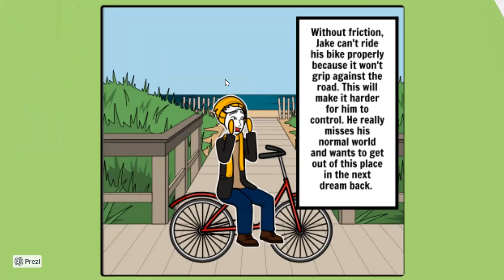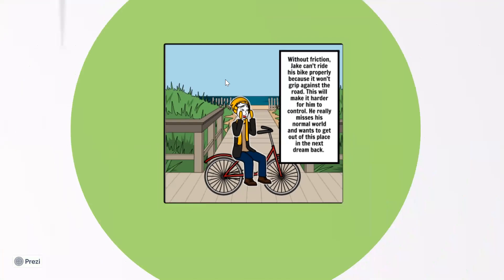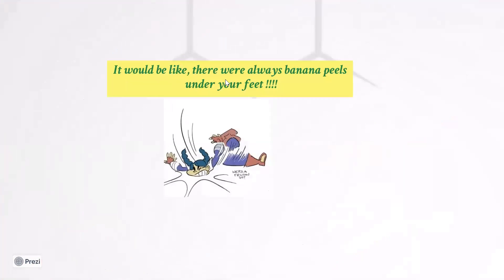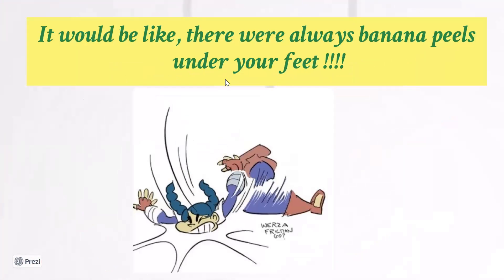You will not be able to even write properly, because we are able to write the way we want just because of the friction between the nib of the pen and the paper. So friction is very much essential. Without friction, everything is going to be like having banana peels under your feet — you will slip and fall around.